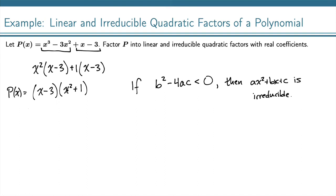So here we have a is 1, b is 0, and c is 1 in this quadratic x squared plus 1. So this is 0 minus 4. That's negative 4, which is, of course, negative. And so this is an irreducible quadratic.